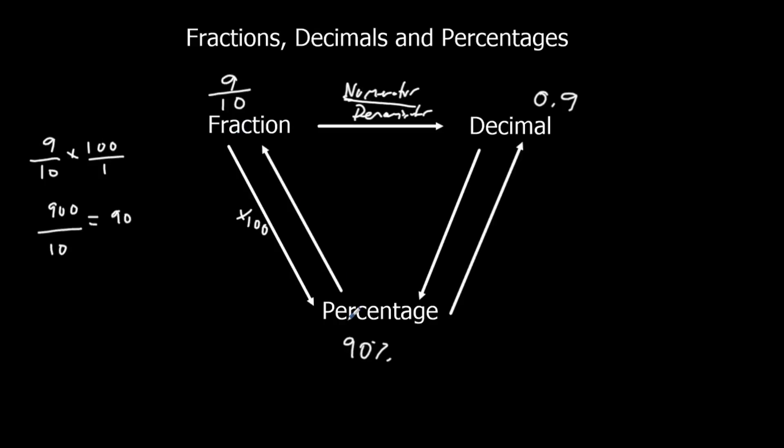If I want to go back from percentage to fraction, that's write it over 100. Because a percentage means it's like a fraction out of 100. So 90% means 90 over 100. And simplify, divide them both by 10, gives 9 tenths.